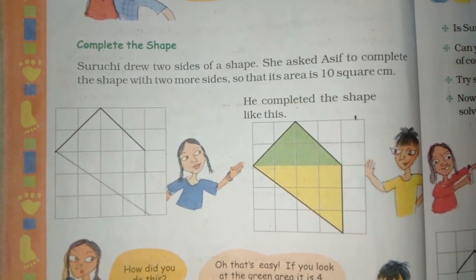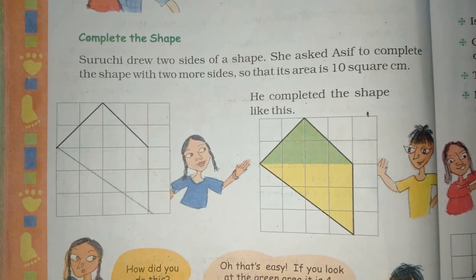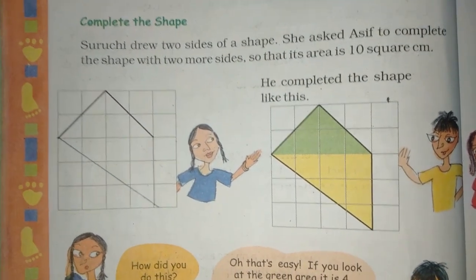Suruchi drew two sides of a shape. She asked Asif to complete the shape with two more sides so that its area is 10 square cm.